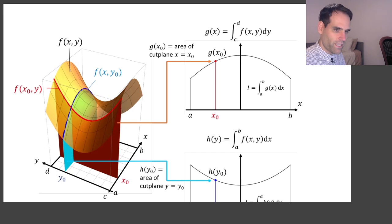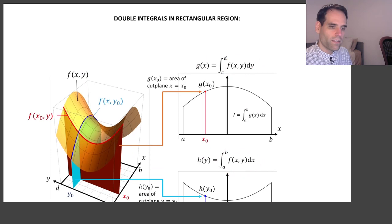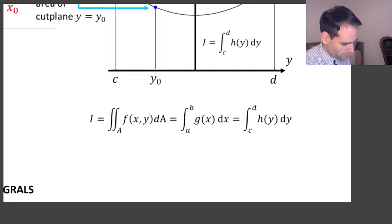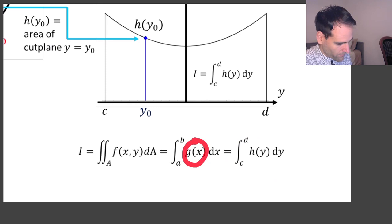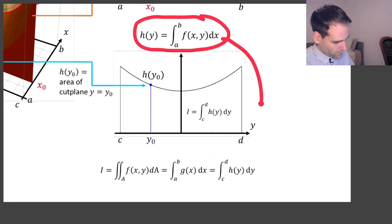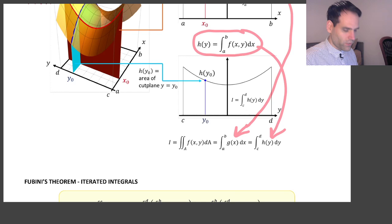So the argument works both ways. We can first integrate along x, then integrate the result along y — or first integrate along y, then integrate the result along x. That is what I'm writing here: first integrating along x gives function h(y), and that result integrated along y; or first integrating along y gives a function g(x), and that result is integrated along x. If I substitute the definition of h(y) and g(x), what I get is what we call Fubini's theorem.